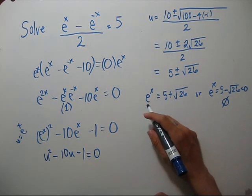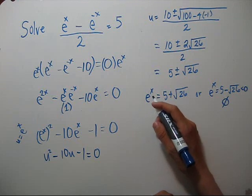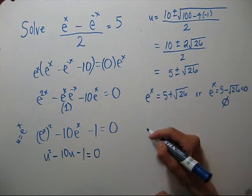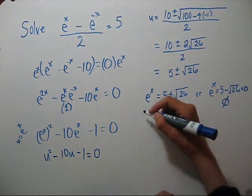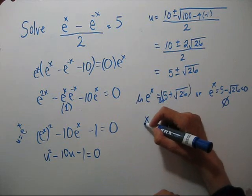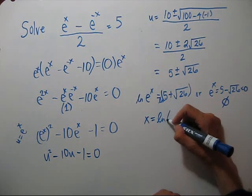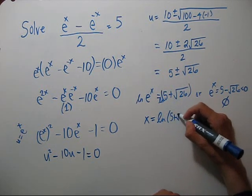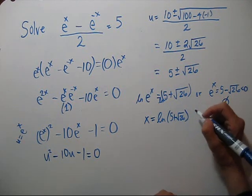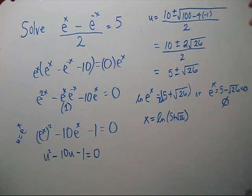To solve this one, we need to bring down that x from our exponent. The way to do that is to natural log both sides. So x equals the natural log of 5 plus the square root of 26. Let's get a decimal representation on that: it equals 2.312 to three decimal places.